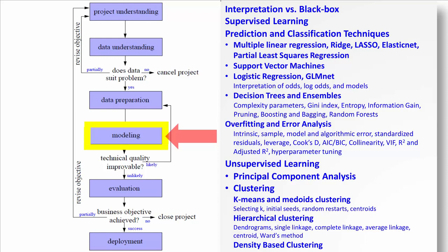We also talked about the idea of overfitting and error analysis when dealing with supervised learning. We have different types of error. We can look at the residuals, the standardized residuals, the studentized residuals. We have leverage of our data points, Cook's D, AIC and BIC scores, collinearity, variance inflation factors, R squared and adjusted R squared. We talked about how we can tune the hyperparameters for our variety of models.